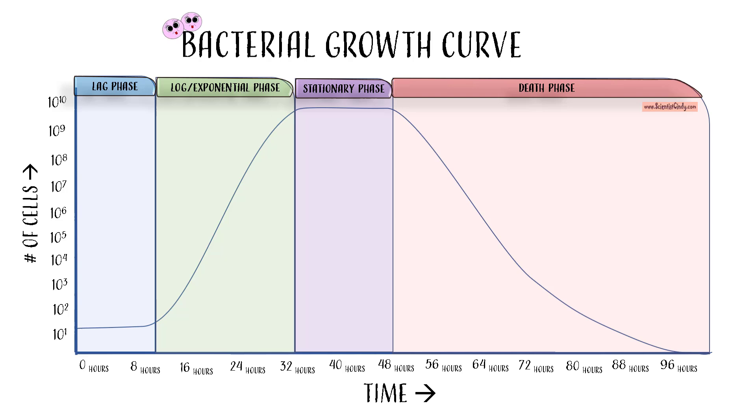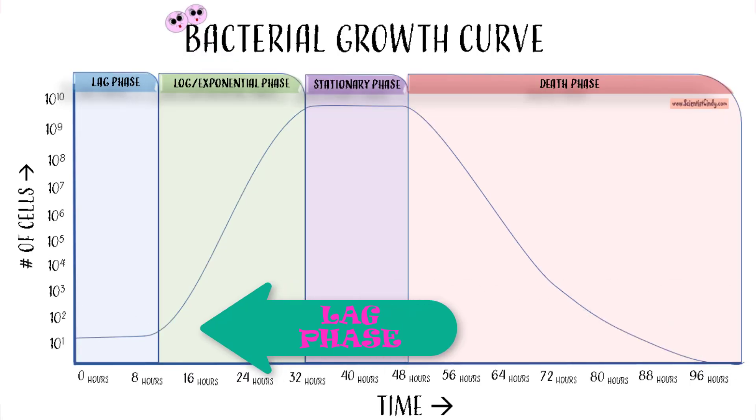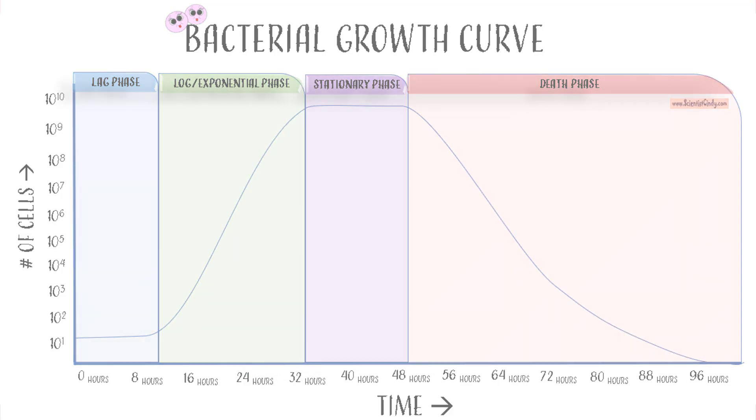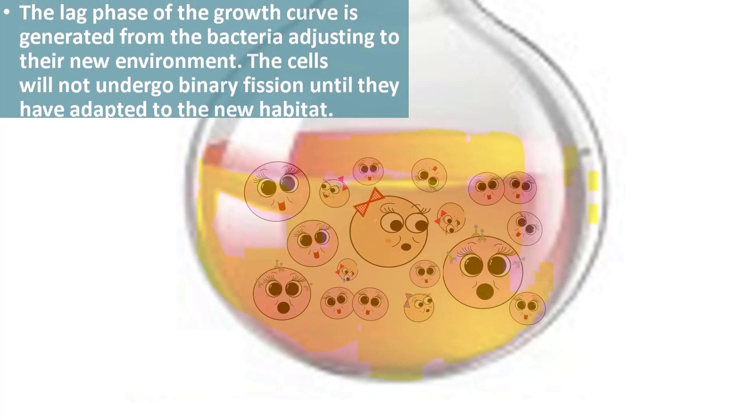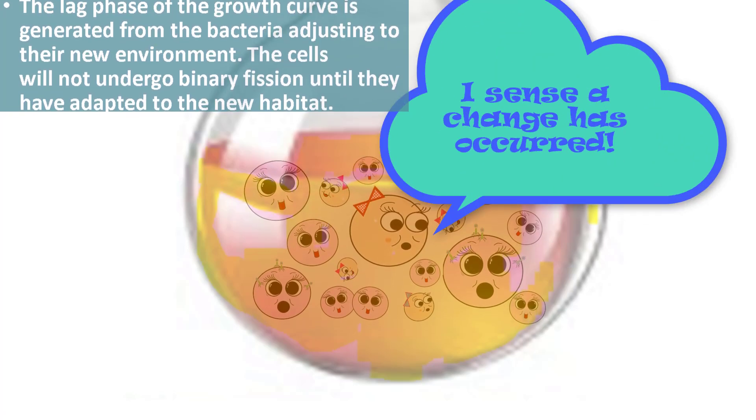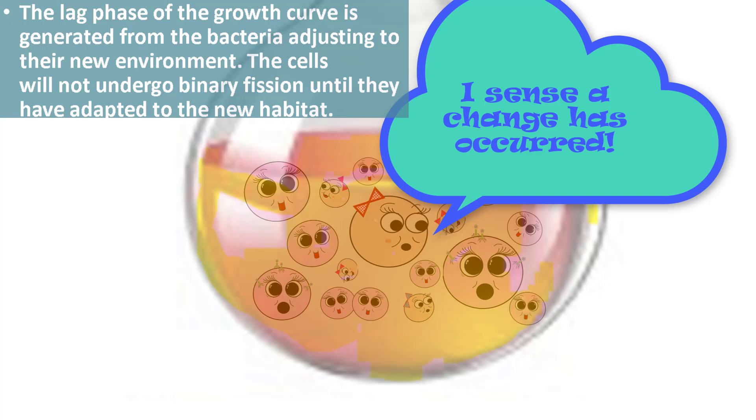The lag phase of the growth curve is when we have no active growth, so the population of cells remains the same during the lag phase. This is because the bacteria are adjusting to the new environment. The cells will not undergo binary fission until they have adapted to their new habitat.